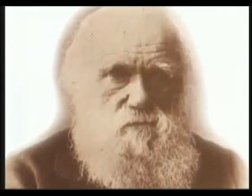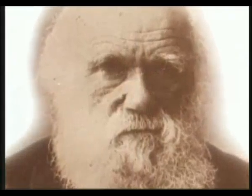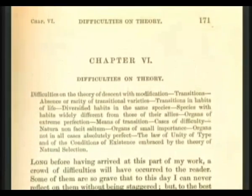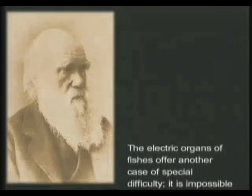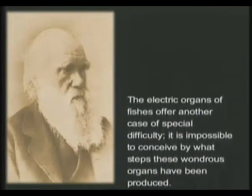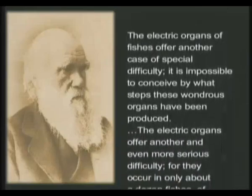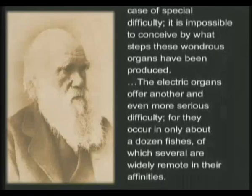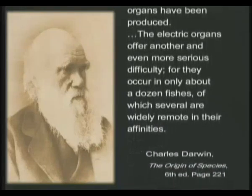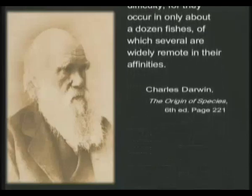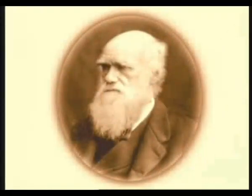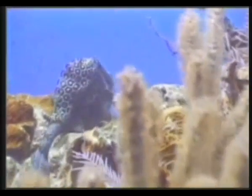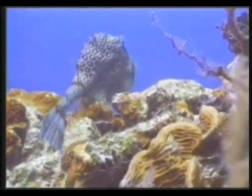The subject of electric fish caused Charles Darwin, the originator of the theory, to think long and hard on the subject and led him to make a number of confessions. In a section of his book 'The Origin of the Species,' called 'The Difficulties on Theory,' Darwin says: 'The electric organs of fishes offer another case of special difficulty. It is impossible to conceive by what steps these wondrous organs have been produced. The electric organs offer another and even more serious difficulty, for they occur in only about a dozen fishes, of which several are widely remote in their affinities.' In fact, there are no end of Darwinian quandaries because every creature beneath the sea possesses biological mechanisms that reveal the divine nature of its creation.